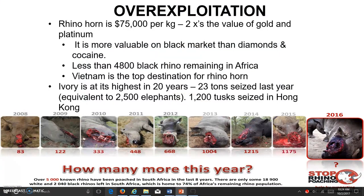Now we're going to shift gears and look at over-exploitation. This was the O in the acronym HIPGO in relation to how humans are impacting biodiversity. The example I'm going to give you for over-exploitation is the rhino horn. The rhino horn is valued at over $75,000 per kilogram — actually two times the price of gold and platinum. It is more valuable on the black market than diamonds or even cocaine. There are less than 4,800 black rhinos remaining in Africa, and Vietnam is the top destination for rhino horn usage.